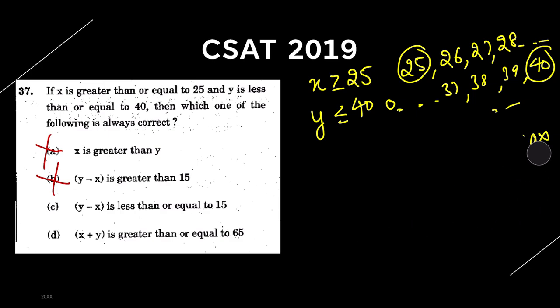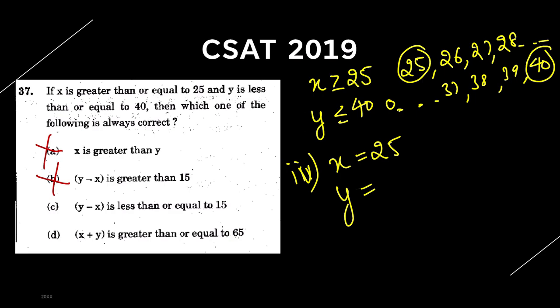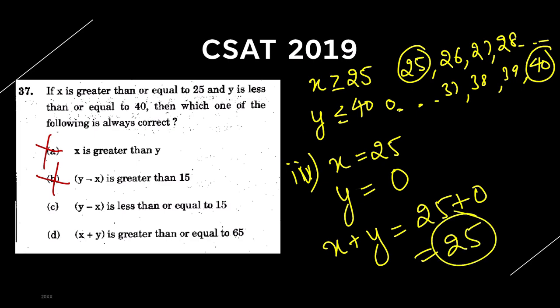Now test the last option: X plus Y is greater than or equal to 65. Take X = 25 and Y = 0. Then X plus Y = 25, which is not greater than or equal to 65. So this option is also wrong. The only correct answer is Y minus X ≤ 15. The maximum value of Y minus X is 15 (when Y = 40 and X = 25), and all other combinations give values less than 15. So option 3 — Y minus X less than or equal to 15 — is the correct conclusion.